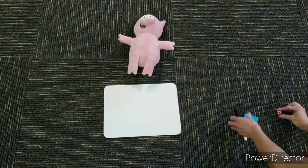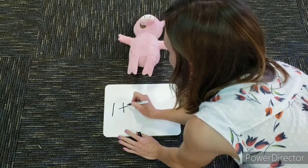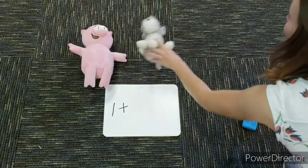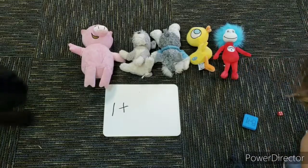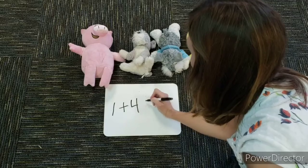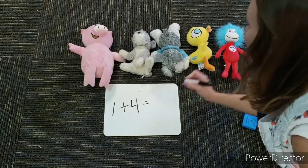What we're going to do is we're going to write one plus, and now I need to add four stuffies. So I'm going to say one, two, three, four. So one plus four equals, and all together we have one, two, three, four, five.